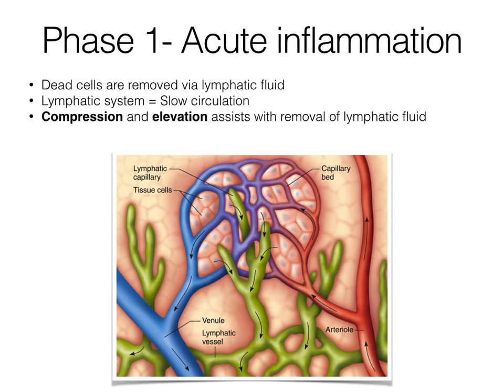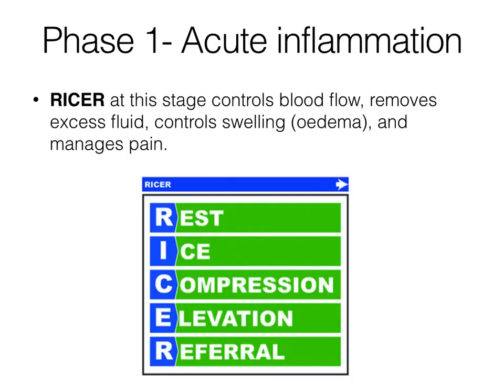That is why compression and elevation, as part of the RISA regime, can help to remove lymphatic fluid efficiently and get rid of dying and dead tissue, which ultimately speeds up the healing process. RISA is important at this stage of the inflammatory response. RISA controls blood flow, removes excess fluid, controls swelling — also known as oedema — and manages pain.